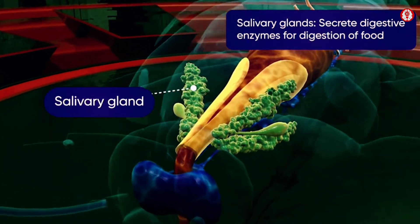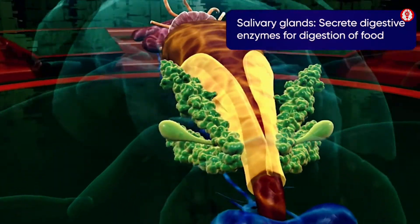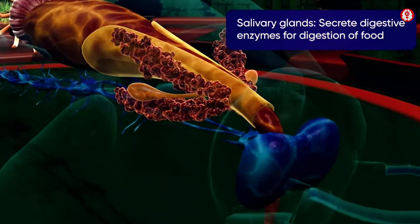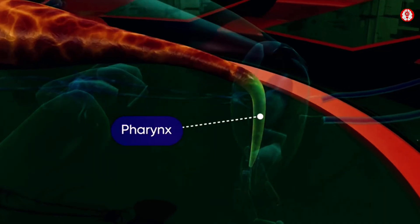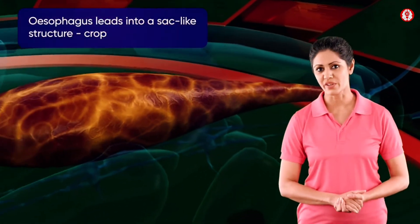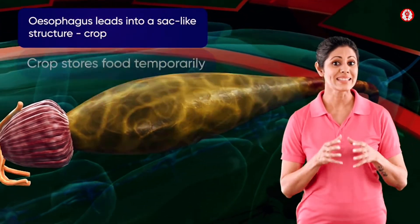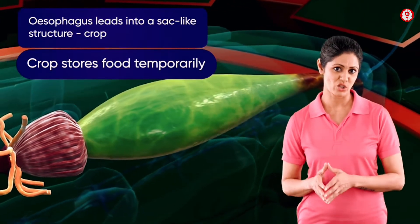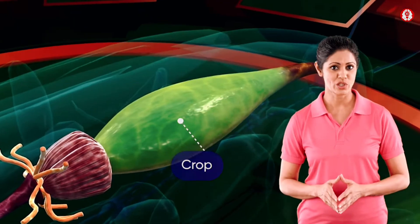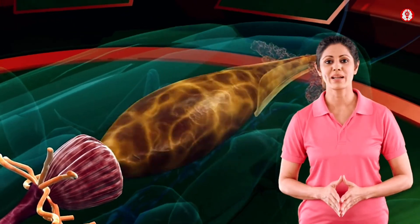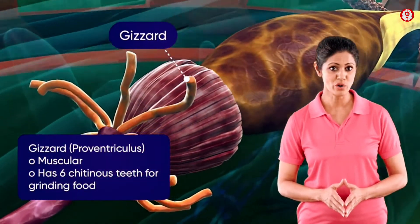A pair of salivary glands lies on either side of the hypopharynx. The mouth leads to a tubular pharynx, which bends and continues as a narrow tubular esophagus. The esophagus extends into a sack-like structure called the crop, which is followed by a muscular gizzard or proventriculus.